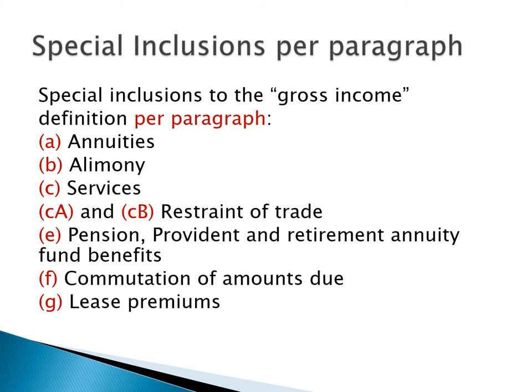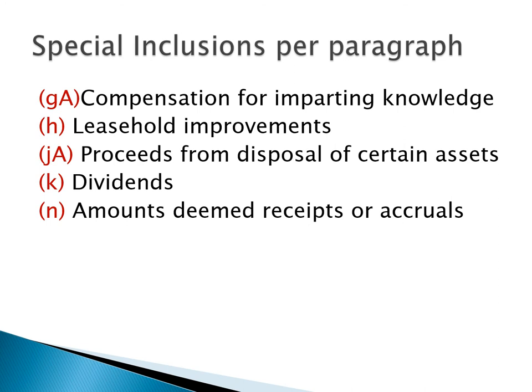Paragraph E deals with pension, provident, and retirement annuity fund benefits. Paragraph F deals with commutation of amounts due. Paragraph G deals with lease premium. Paragraph GA deals with compensation for imparting of knowledge. Paragraph H deals with leasehold improvements. Paragraph JA deals with proceeds from disposal of certain assets. Paragraph K deals with dividends, and paragraph N deals with amounts deemed receipts or accruals.